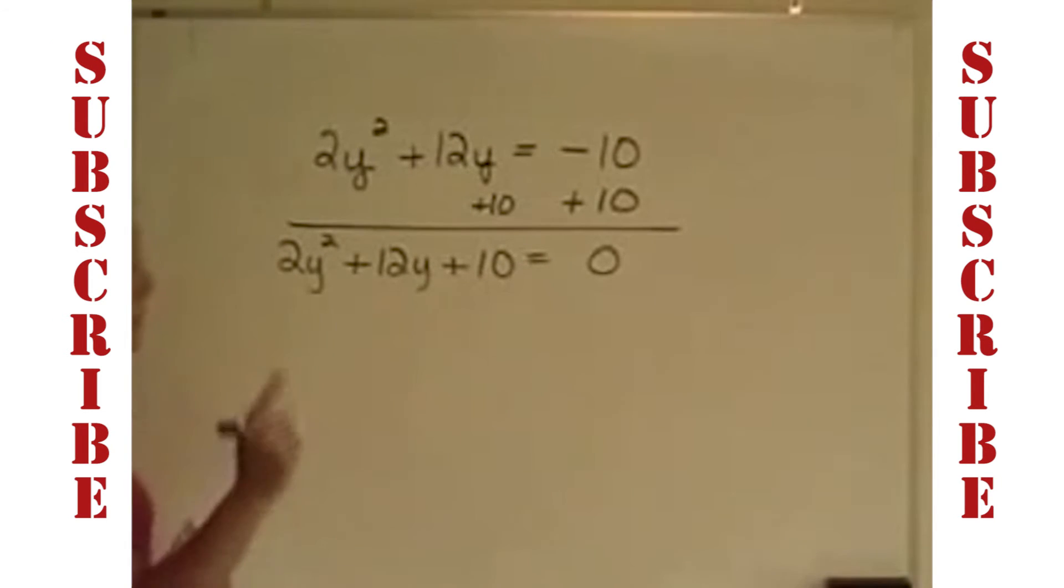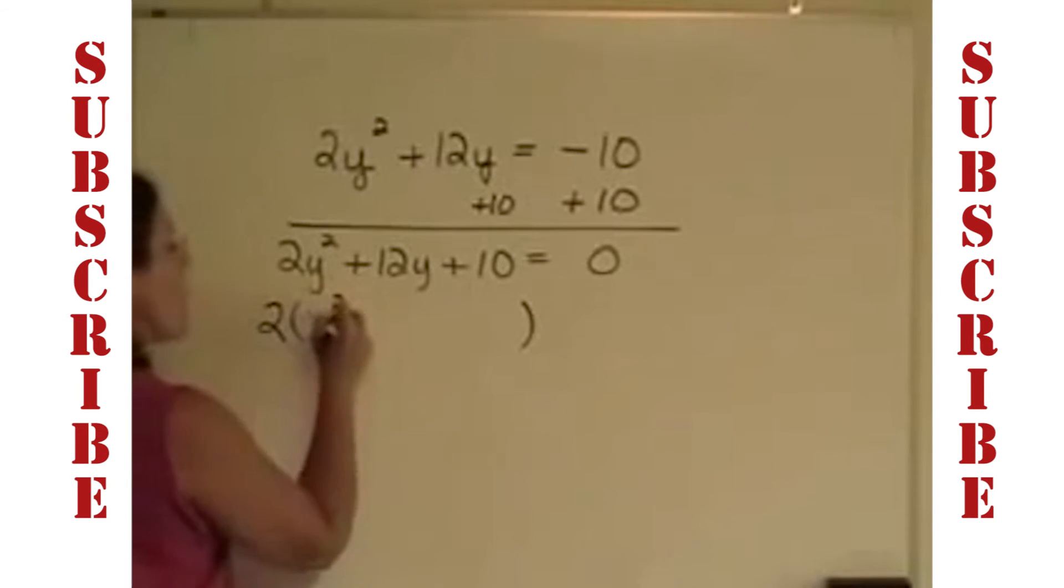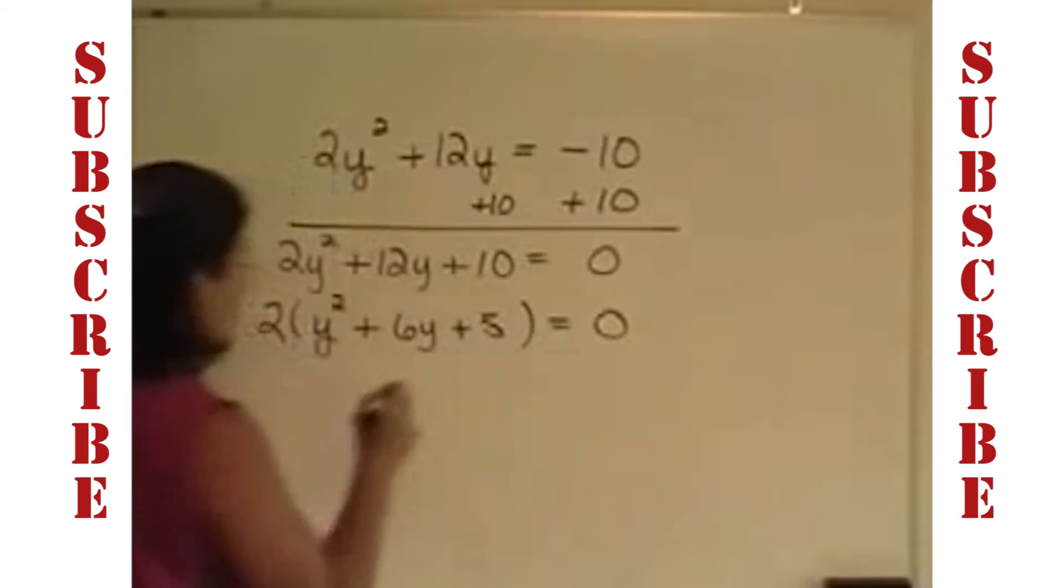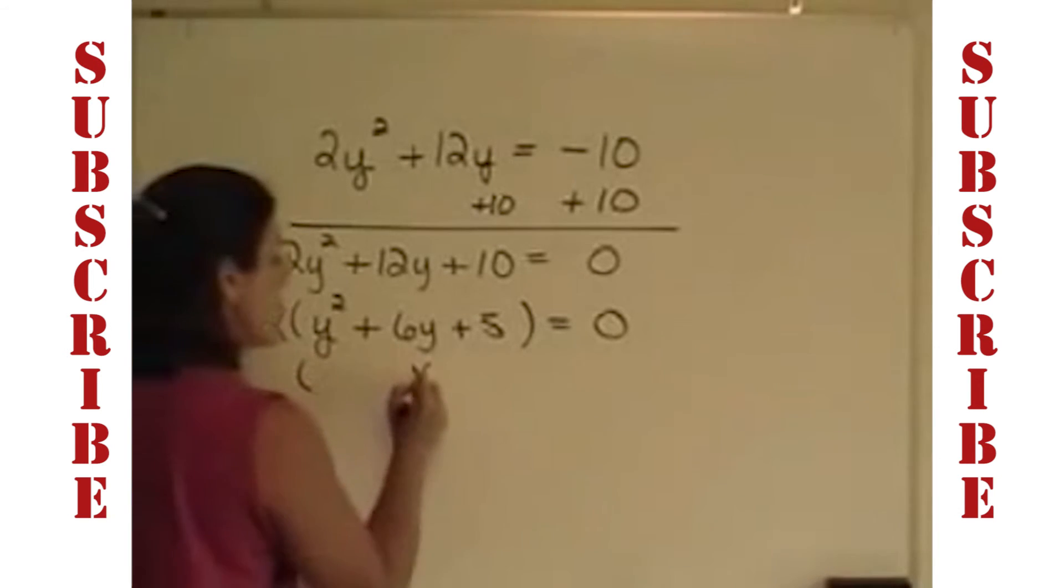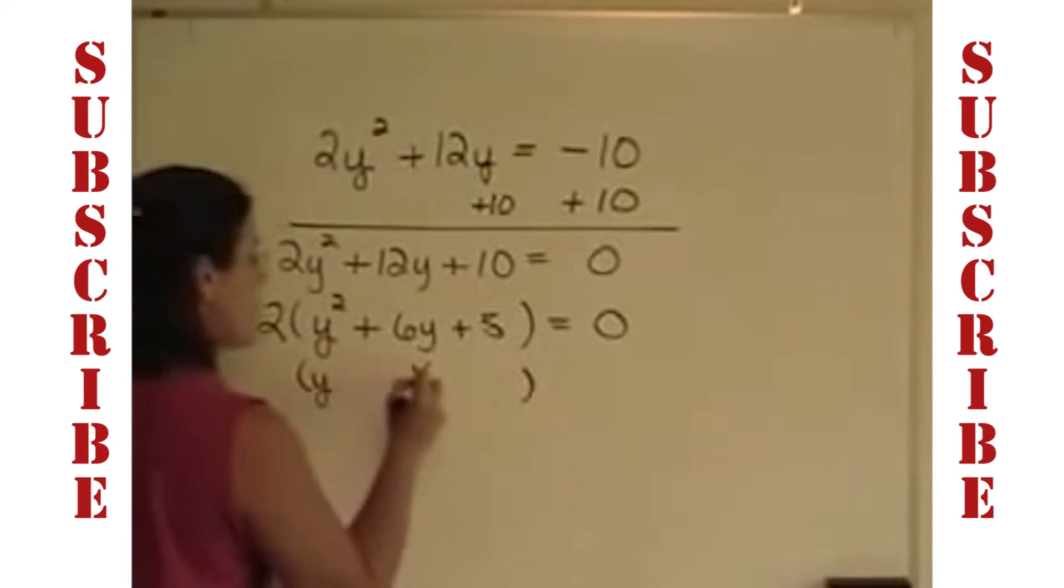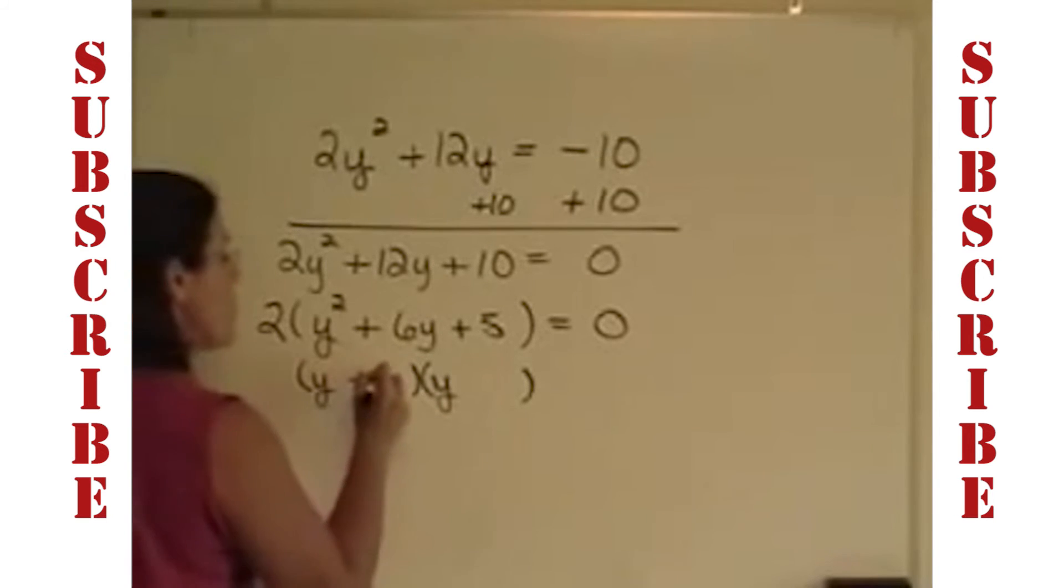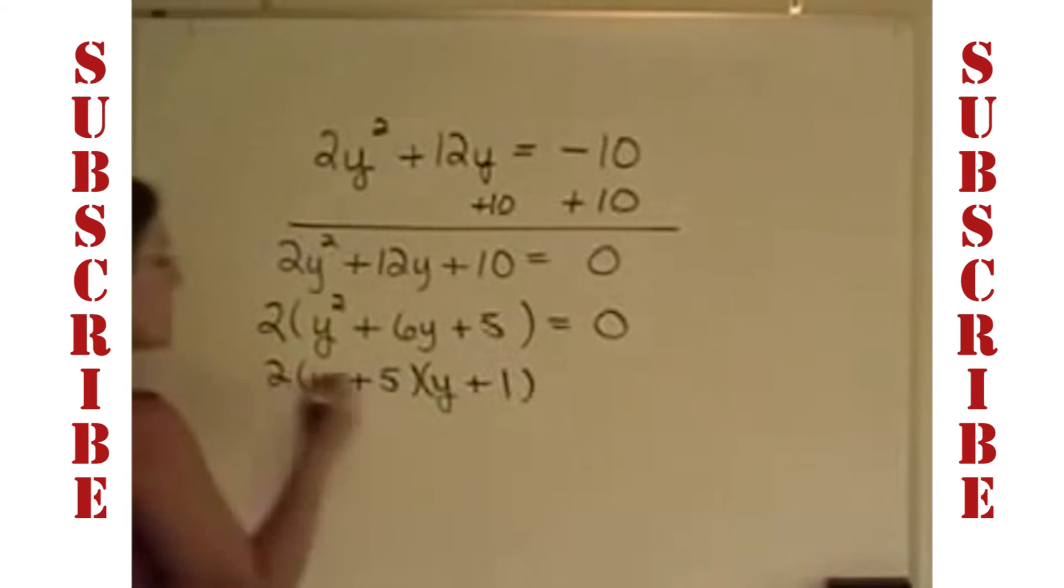I'm ready to factor this. Remember, the first step in factoring is to take the greatest common factor out first. So I'm going to factor a 2 out of this expression, and that's all I'm going to do. When I do, I'll have y squared plus 6y plus 5. I'm ready now to take a look at this trinomial and see if it can be factored. It is a trinomial with a 1 in front of the squared term. That's nice. I can put a y in the front of each of these binomials, and I'm now looking for 2 numbers whose product is 5 and sum is 6. That's going to have to be a positive 5 and a positive 1. Bring your 2 down.